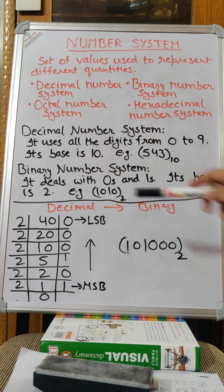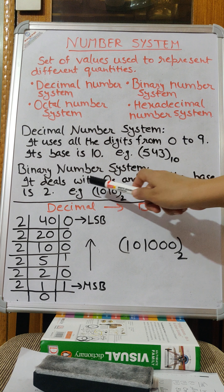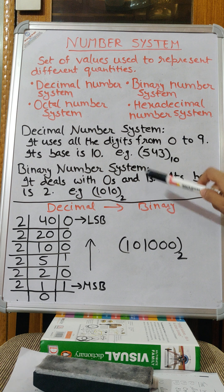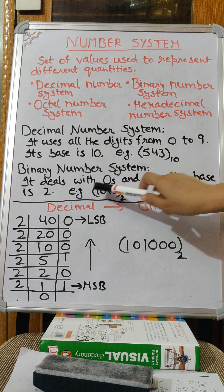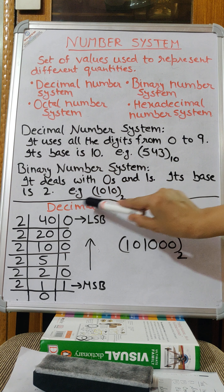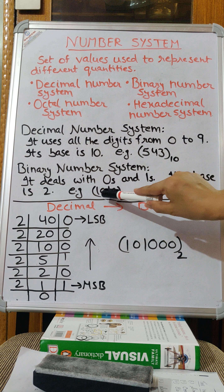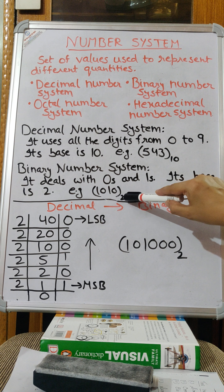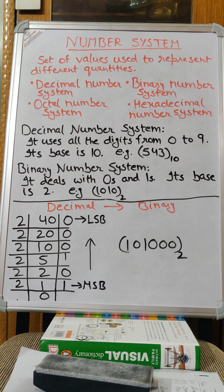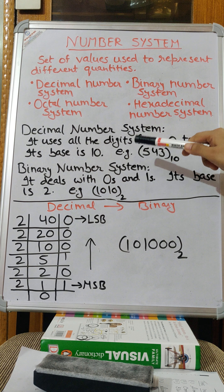Binary number system deals with 0s and 1s, and its base is 2, because there are only two digits: 0 and 1. How will you represent it? For example, 1010 with base 2. Today we are going to learn about these two number systems and the conversion of decimal to binary and binary to decimal.